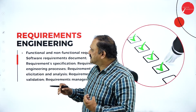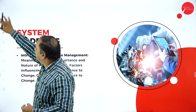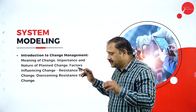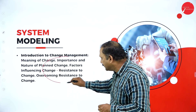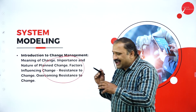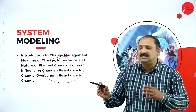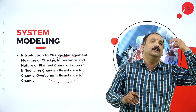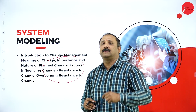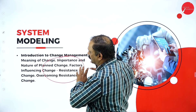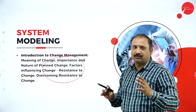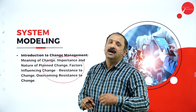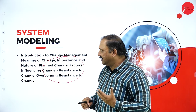The third module is system modeling, where we talk about change management — plan change, factors resisting change, resistance, and overcoming the resistance factor. These are very important topics without which we cannot understand the entire system concept. It is quite interesting to learn how a system can be modeled and taken forward.